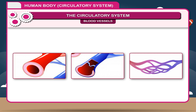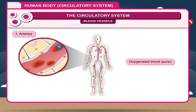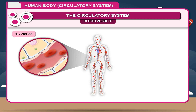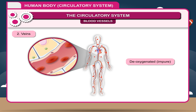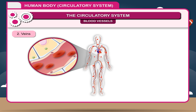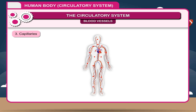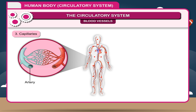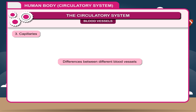Blood vessels are tube-like structures within which blood circulates, and they are of three types. Arteries are blood vessels that carry oxygenated, pure blood from the heart to different parts of the body; they are lined with muscles to withstand pressure. Veins are vessels that carry deoxygenated, impure blood from different parts of the body to the heart; they contain semilunar valves which prevent backward flow of blood. Capillaries are arteries converted into fine tubules called arterioles, and finally into capillaries which form a network — they are the tiny link between arteries and veins, where oxygen and nutrients diffuse into the blood tissues.